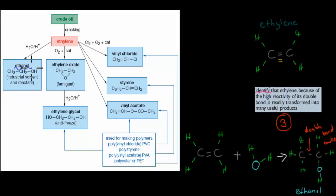So for example, ethanol, which I'll go over in a second, ethylene oxide, vinyl chloride, styrene, vinyl acetate, and ethylene glycol. So ethanol is a disinfectant, ethylene glycol is an antifreeze, and the other ones are plastic.